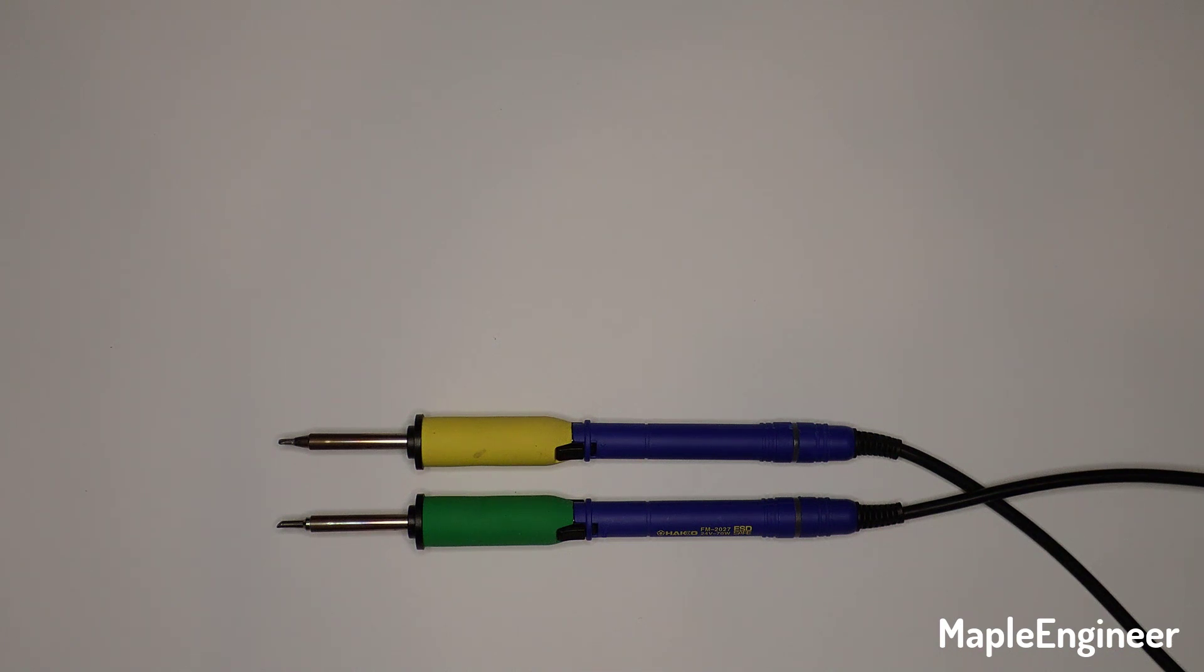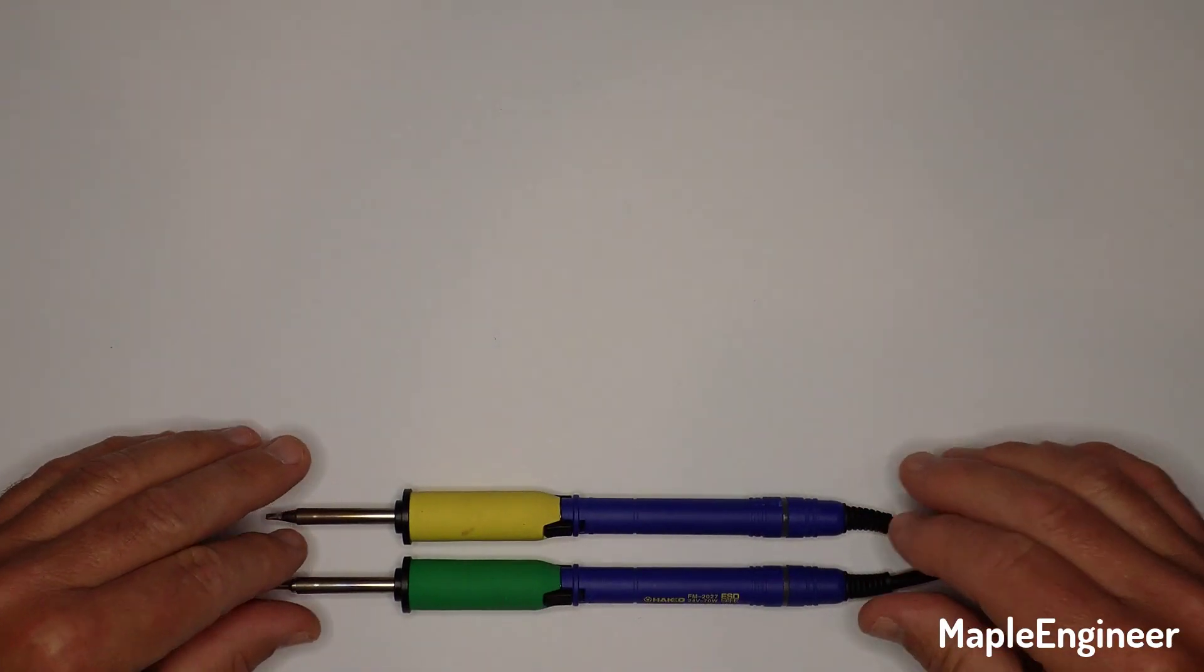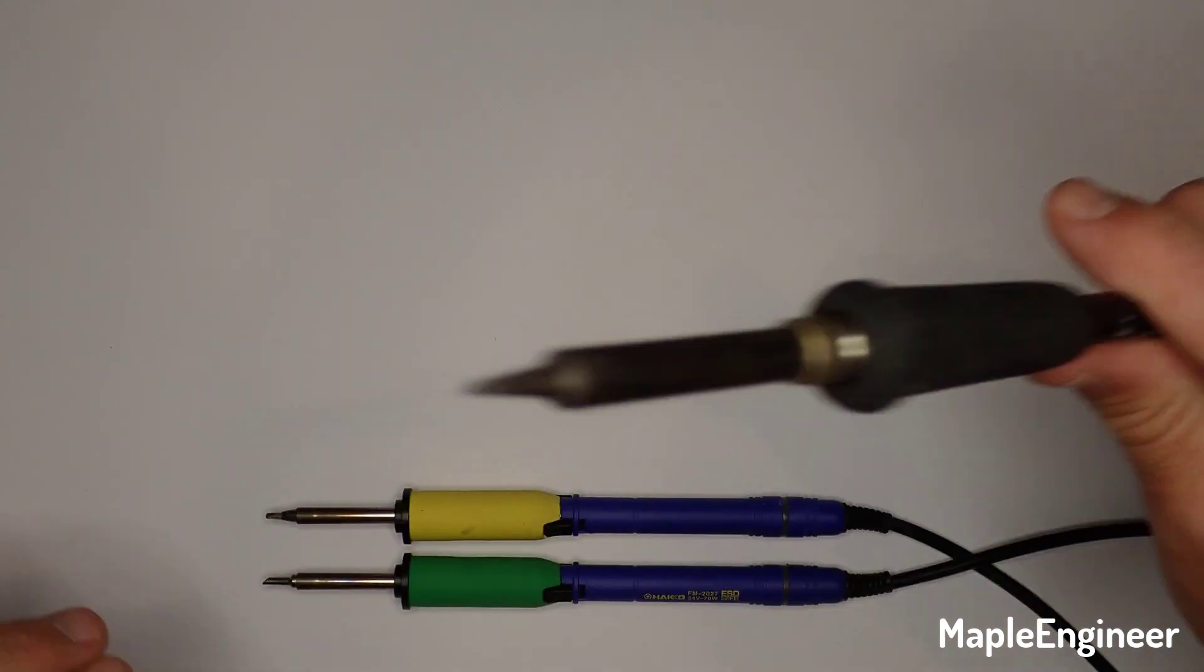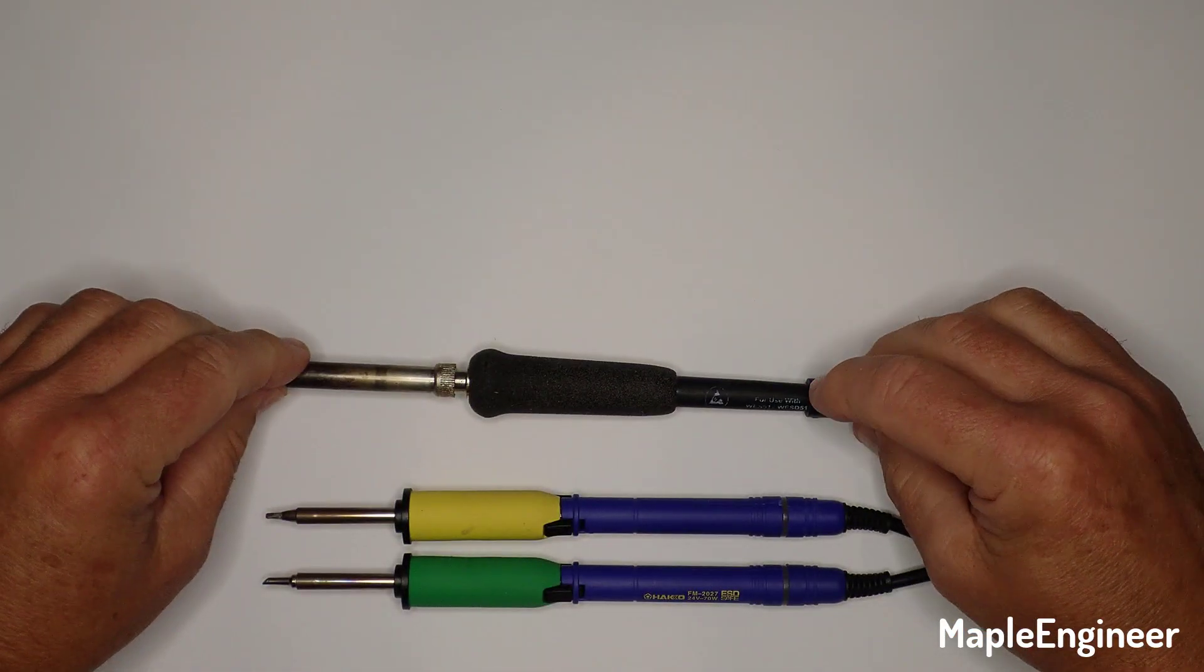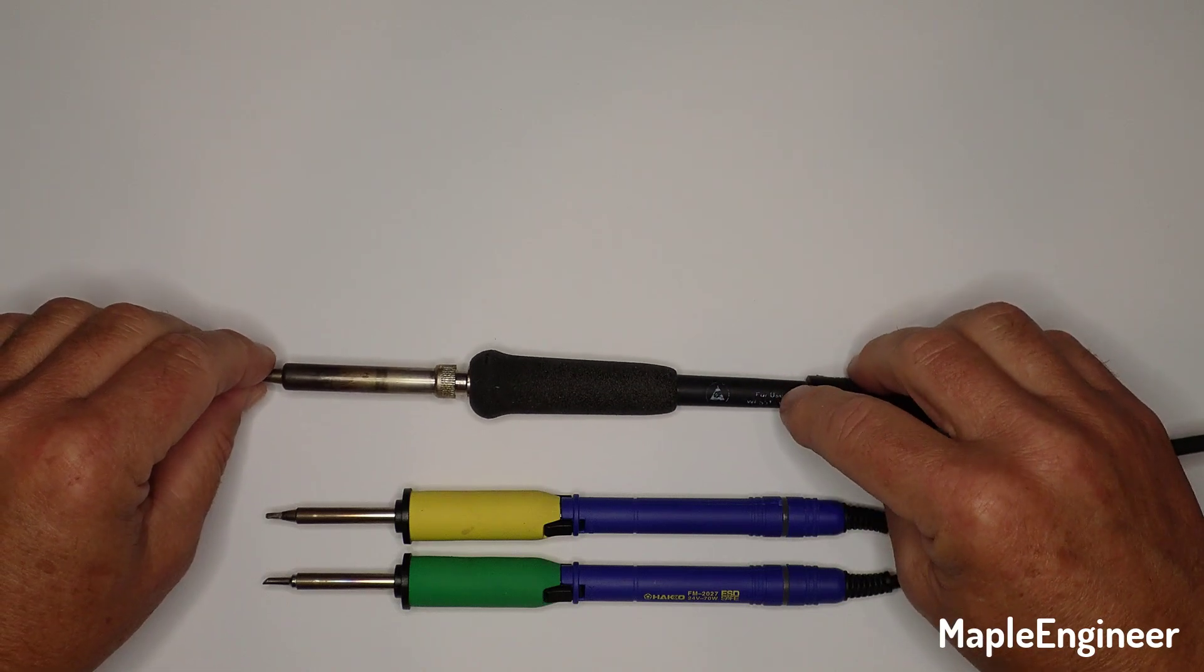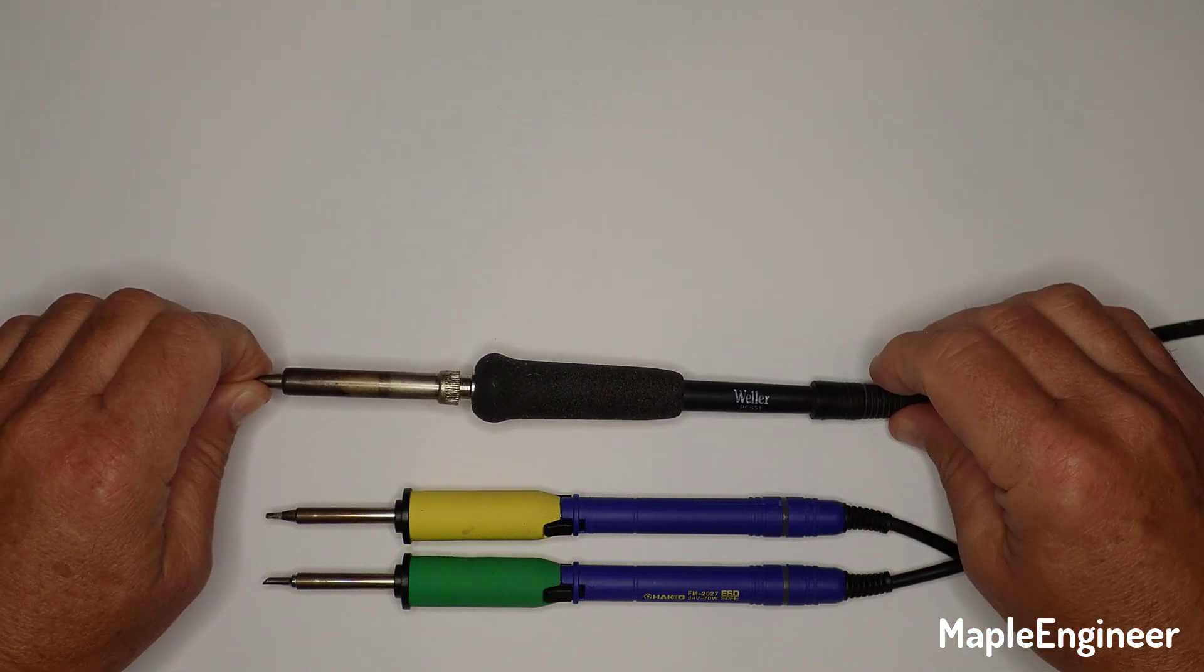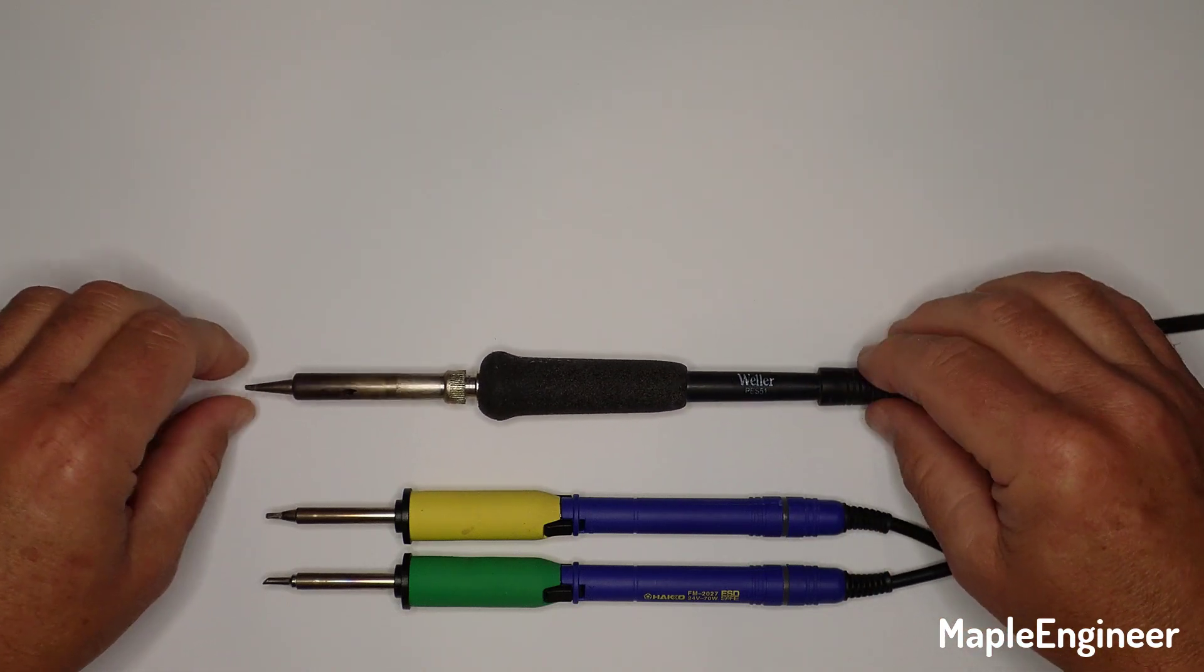The other iron that I have on my desk is this one, which is a Weller PES 51. I think that's what it is, PES 51.